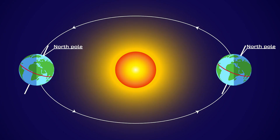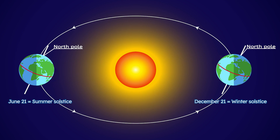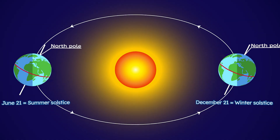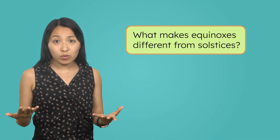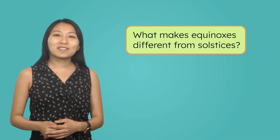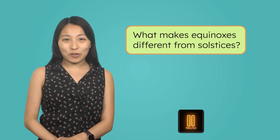In North America, the summer solstice is around June 21st and is the longest day of the year because the North Pole is tilted closest to the sun, giving us the most daylight hours. The winter solstice is around December 21st and is the shortest day of the year because the North Pole is tilted furthest from the sun, giving us the fewest daylight hours. So what about equinoxes — what makes them different from solstices? What do you think? Pause the video and record your thoughts in your guided notes.